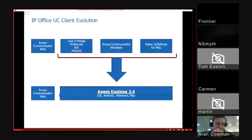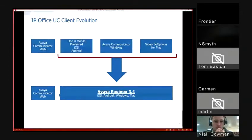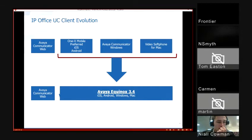Moving forward with IP Office, we're looking at UC applications and trying to push towards a single UC client. Rather than having Avaya Communicator for Windows as a soft phone, a different soft phone for Mac, a different application for mobile, and WebRTC clients — the idea is to bring all these into a single client. We'll see a move to Avaya Equinox, meaning your mobility client and your desktop soft phone will be a single client with a consistent cross-platform experience across Windows, Mac, and mobile.